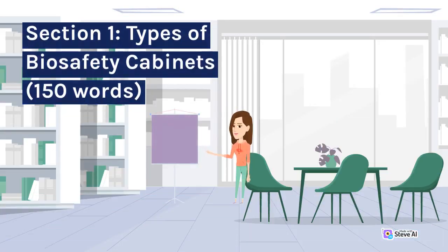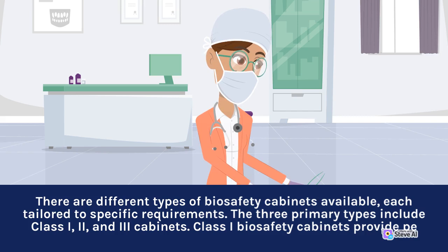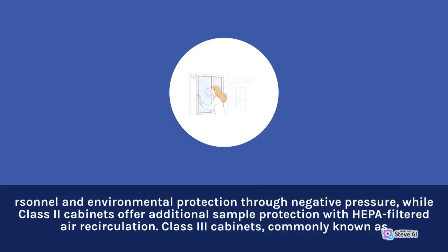Section 1: Types of Biosafety Cabinets. There are different types of biosafety cabinets available, each tailored to specific requirements. The three primary types include Class I, II, and III cabinets. Class I biosafety cabinets provide personnel and environmental protection through negative pressure, while Class II cabinets offer additional sample protection with HEPA-filtered air recirculation.